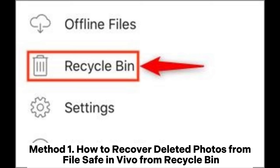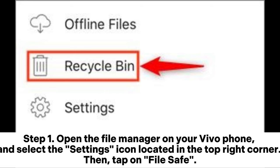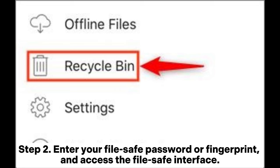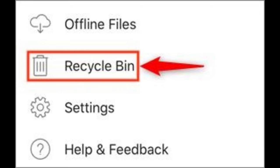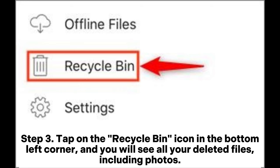Method 1: How to recover deleted photos from File Safe in Vivo from the Recycle Bin. Step 1: Open the File Manager on your Vivo phone and select the Settings icon located in the top right corner, then tap on File Safe. Step 2: Enter your File Safe password or fingerprint and access the File Safe interface.